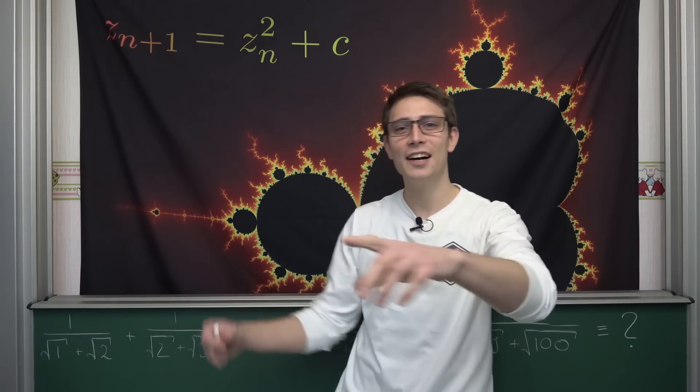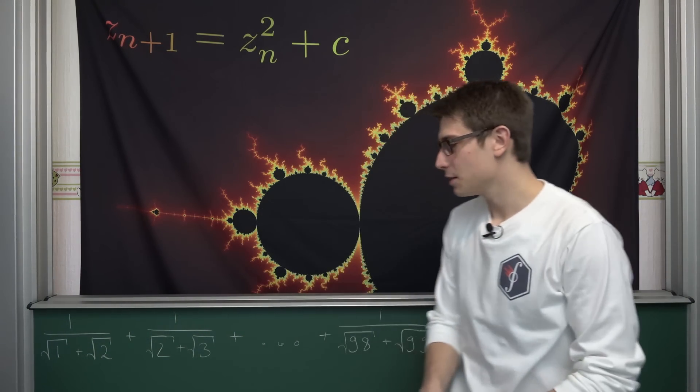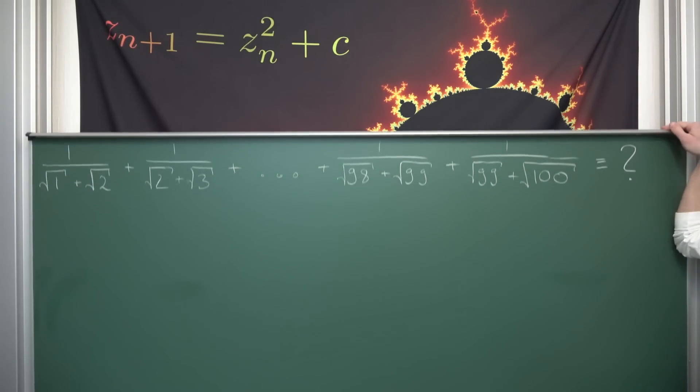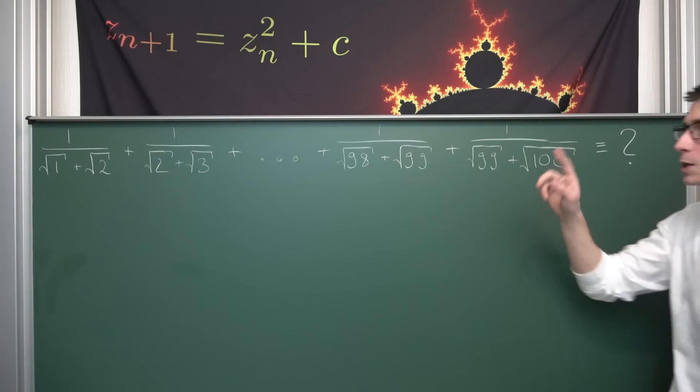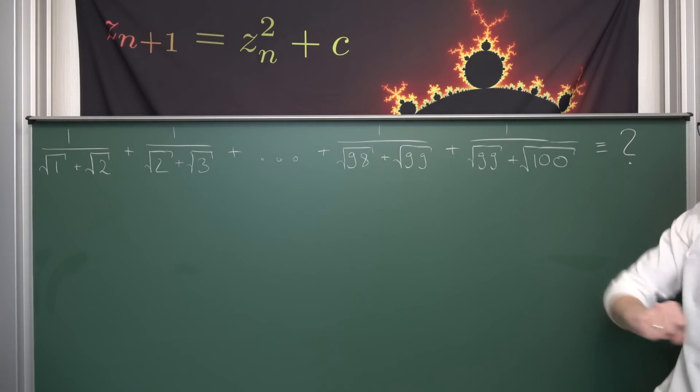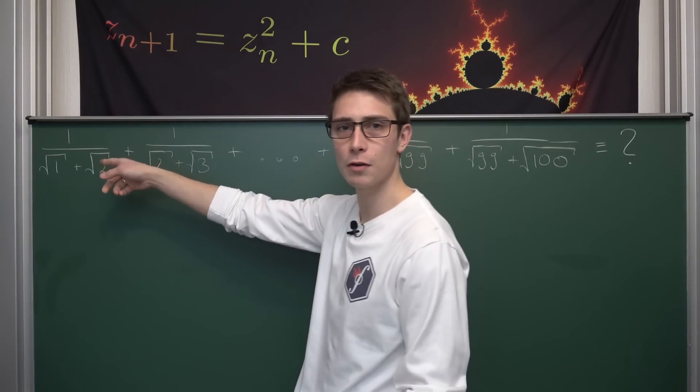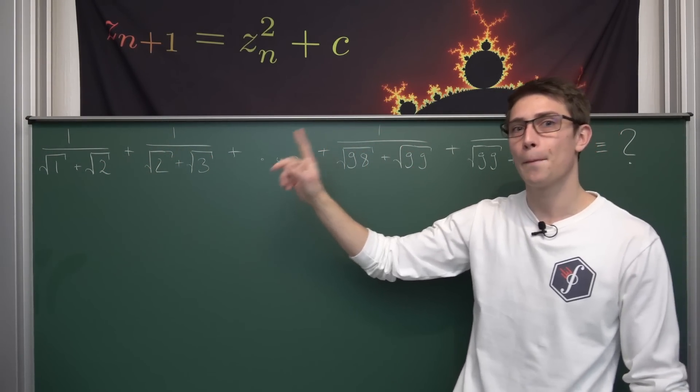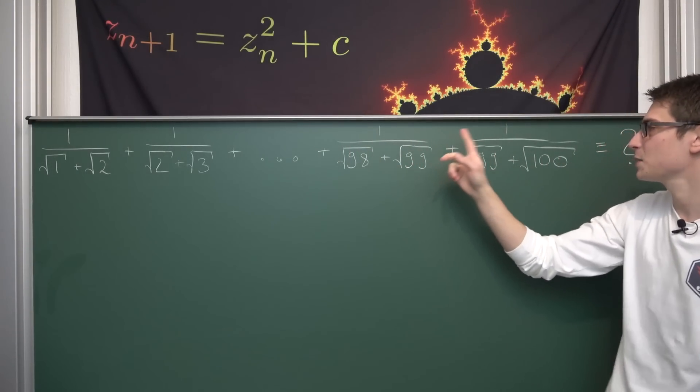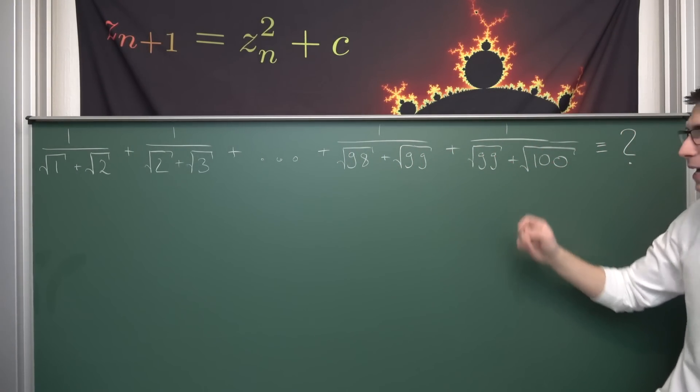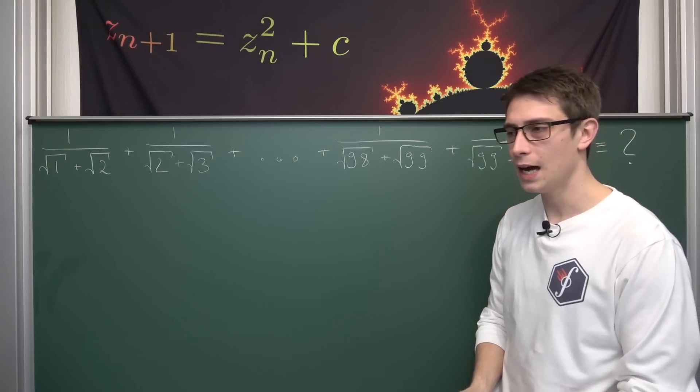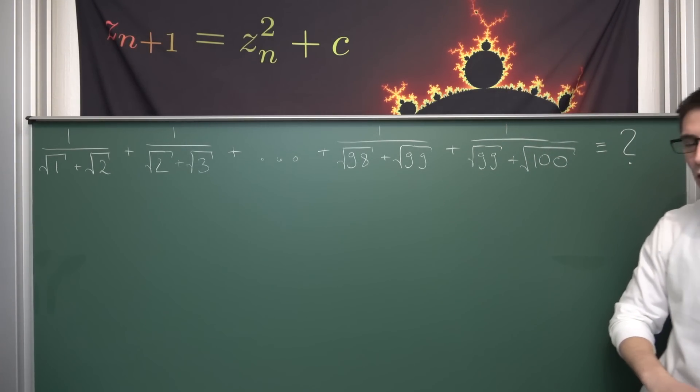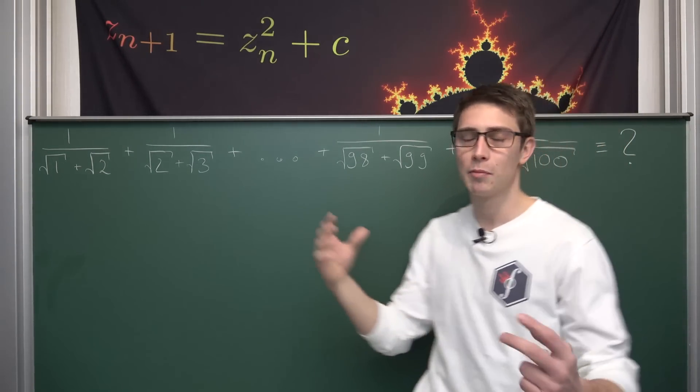We are going to take a look at a very short but nice little mathematics question, namely we want to find out what the value of this weird finite summation is. The one of 1 over square root of 1 plus square root of 2, plus 1 over square root of 2 plus square root of 3, and I think you can see the pattern, up until 1 over square root of 99 plus square root of 100. And well this expression looks really ugly at first but it's going to collapse into something that looks pretty good.